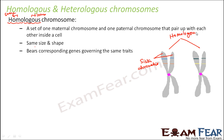Why are they homologous chromosomes? Because maybe this one is coming from the maternal side and this one is coming from the paternal side. Secondly, they have the same size and same shape. Also, the genes which are present here — similar genes will be present on the other chromosome at the same location. That is why the term 'locus' is used here.